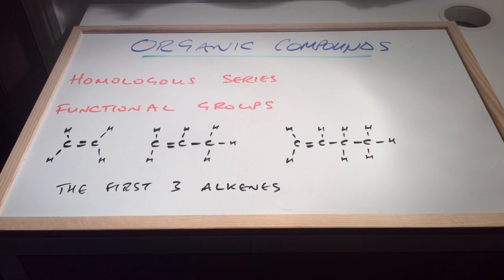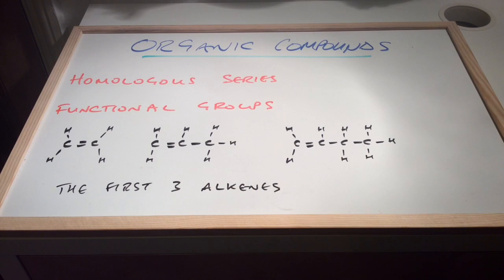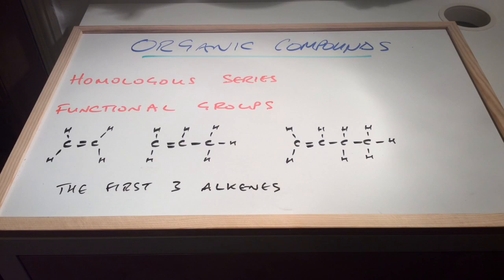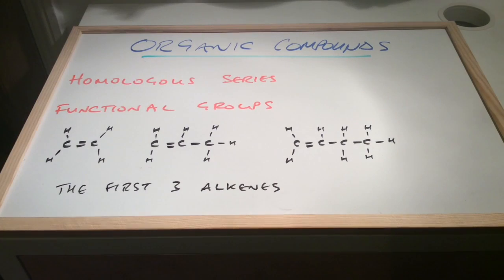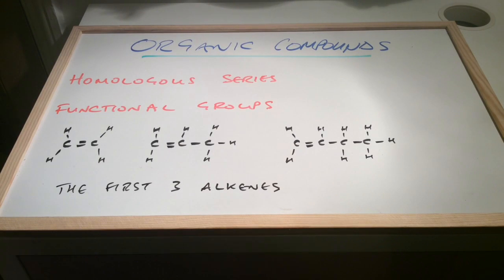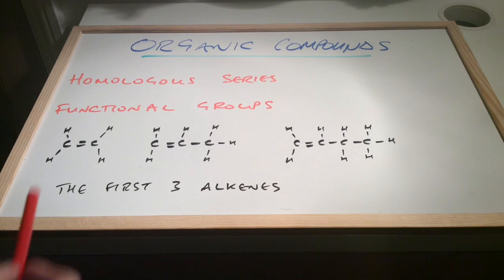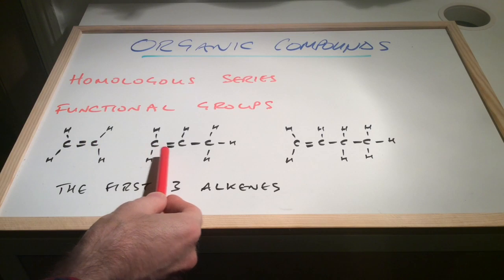We'll start off by looking at a series of organic compounds known as the alkenes. I've drawn up in black the first three alkenes. On the left we've got ethene with two carbons, then we've got propene in the middle with three carbons, and we've got butene, or but-1-ene, on the right with four carbons. These all belong to the same class of organic compound, or organic family, because of the presence of the carbon-carbon double bond in each of the molecules.